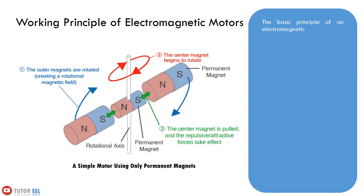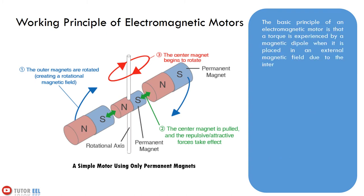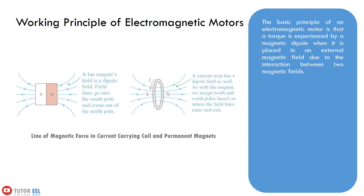The basic principle of an electromagnetic motor is that a torque is experienced by a magnetic dipole when it is placed in an external magnetic field, due to the interaction between two magnetic fields. Ampere's law tells us that current passing through a wire generates a magnetic field. If we shape that current-carrying wire into a loop and place it in a magnetic field, the interaction between the two fields will apply a turning force, and consequently a torque moment, to the wire.